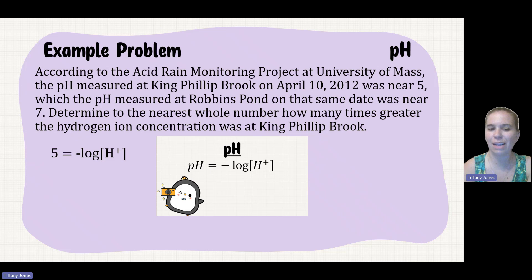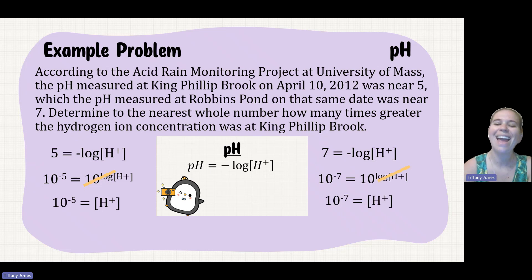So 5 = -log[H+]. We get rid of the logarithm by taking 10 to the power on both sides, so 10^-5 = [H+]. We'll do the same with pH 7. So 7 = -log[H+]. Taking 10 to the power on both sides gets rid of the logarithm, giving us 10^-7 = [H+].